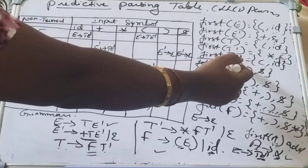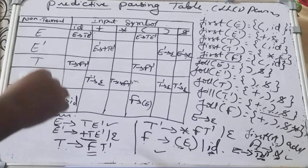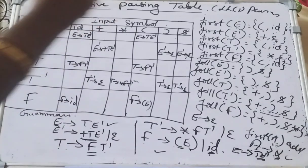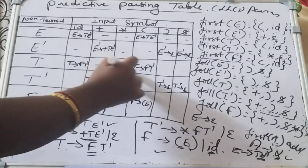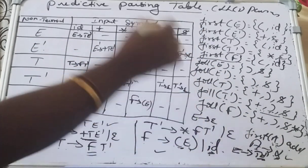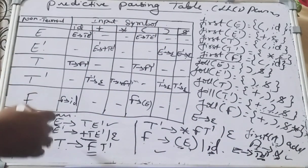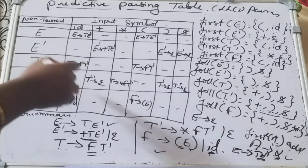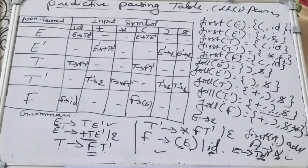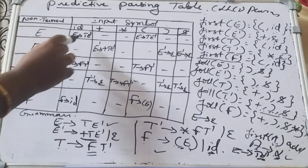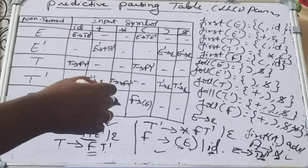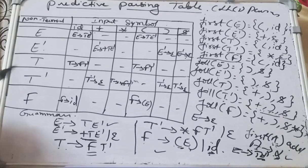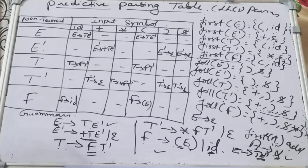That's all — we have now constructed the complete LL(1) predictive parsing table. The blank spaces left in the table are called errors; whenever the predictive parser encounters a blank space, it indicates an error. This is a valid LL(1) parser because for every single input symbol there is only one production, so no ambiguity arises. Hope you understood how to fill the predictive parsing table using FIRST and FOLLOW. Please subscribe, like, and comment. Thank you.